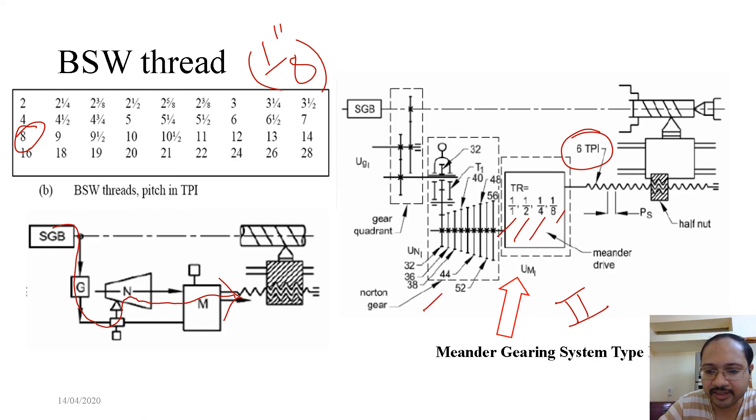Similarly, you have the Norton gear tumbler set as before, with different gear ratios, and all of them combined to form 4 by 9, so 36 combinations of pitch which is in threads per inch.